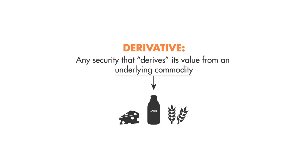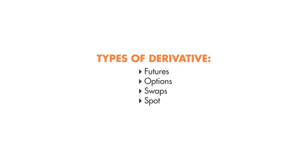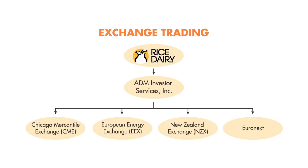Types of derivatives include futures, options, swaps, and spots. Derivatives can be traded on an exchange. Here at Rice Dairy, we clear through ADM Investor Services and trade on the Chicago Mercantile Exchange, the European Energy Exchange, and the New Zealand Exchange.